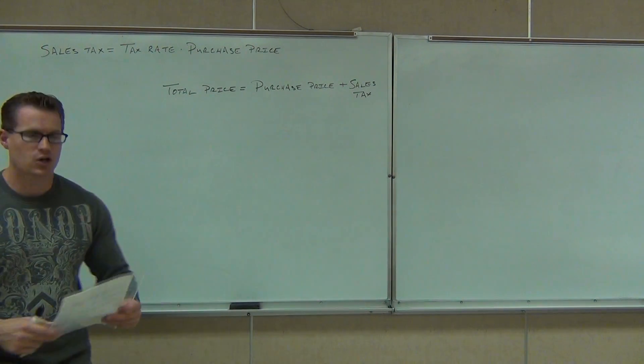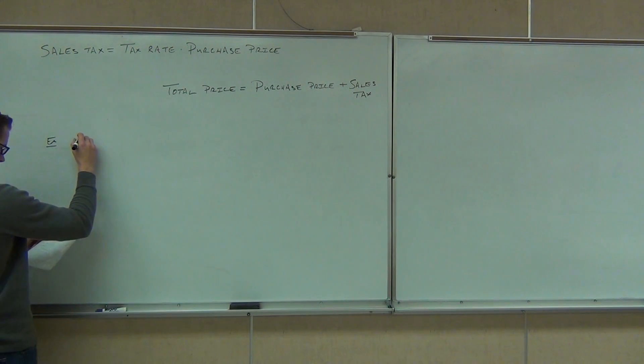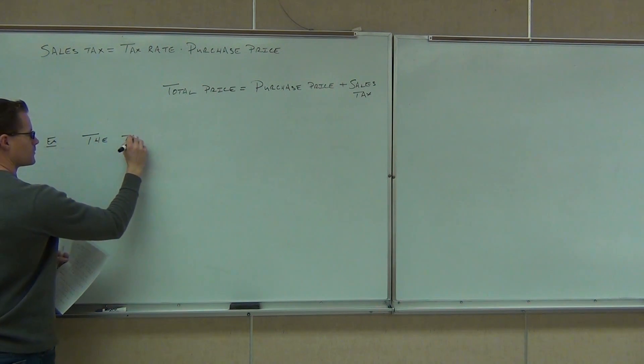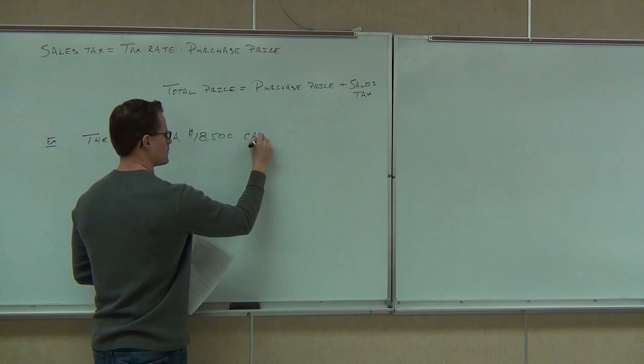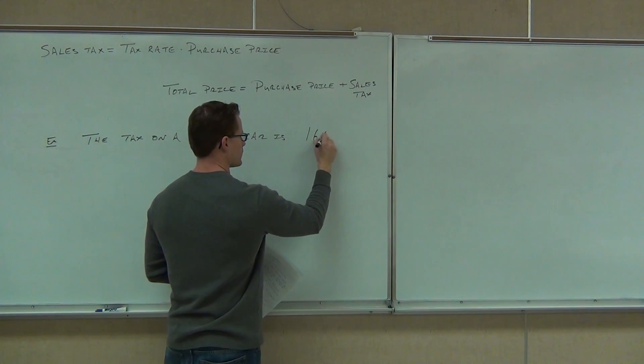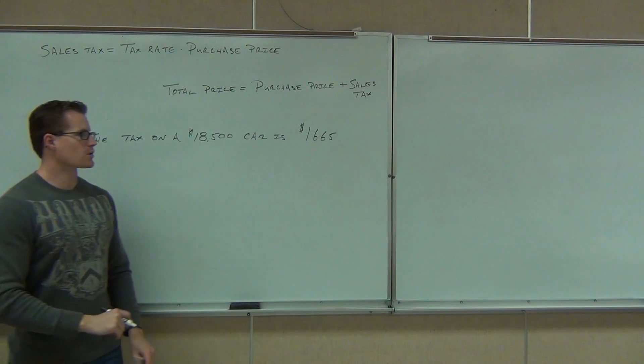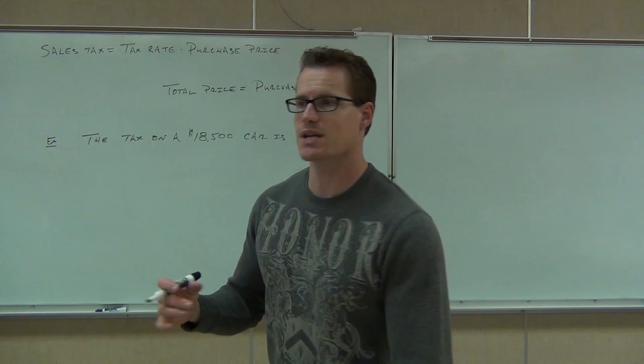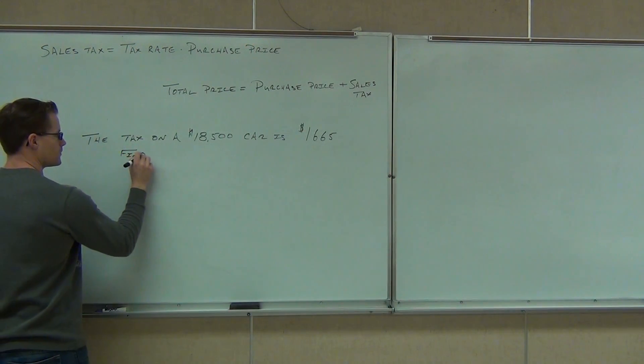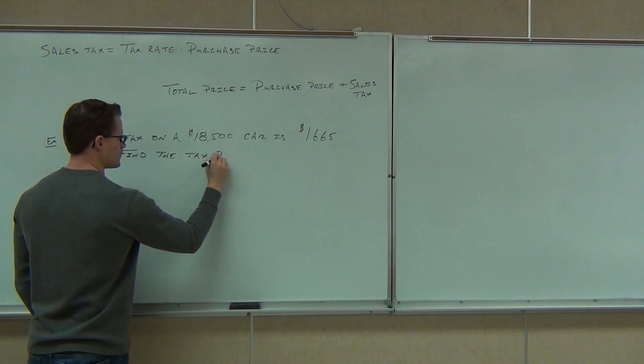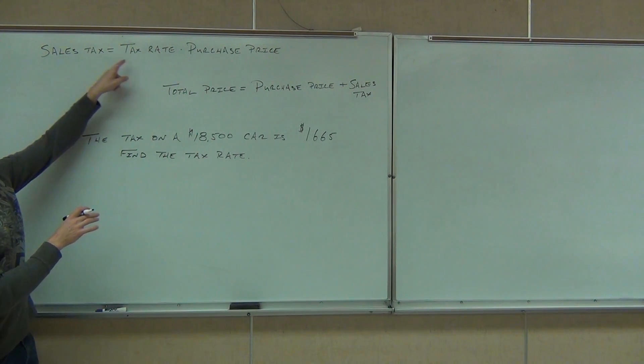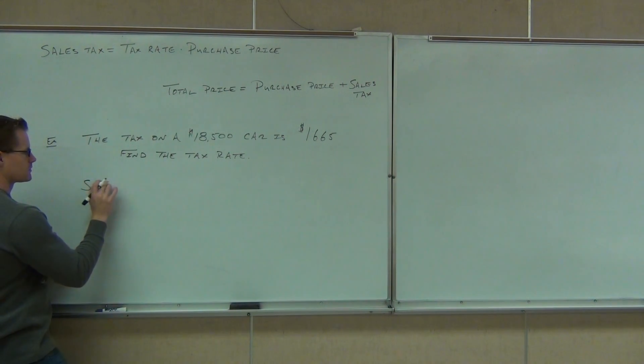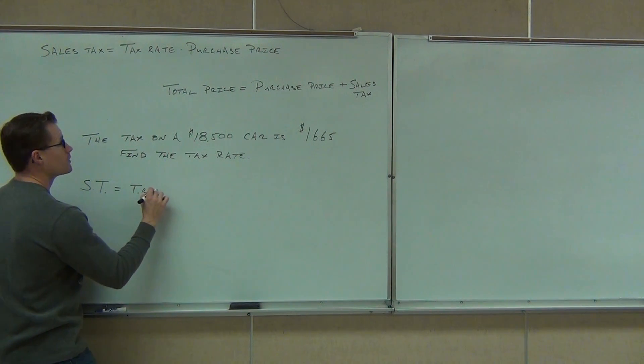So let's see if we can do that with this example. We knew that we bought a car, an $18,500 car. The tax on the $18,500 car is $1,665. What we want to do is find out the tax rate.